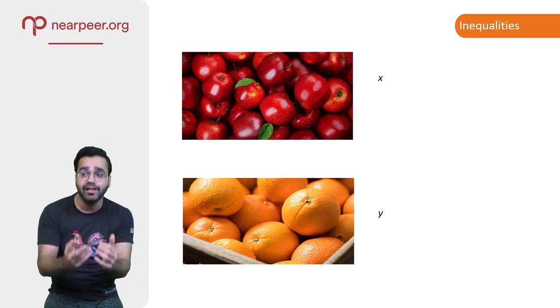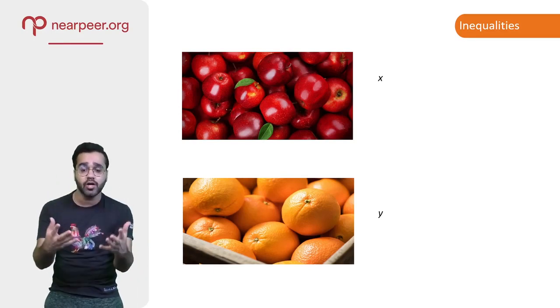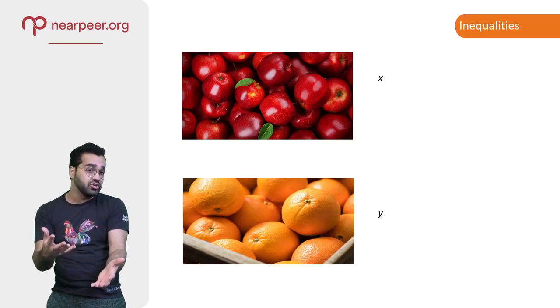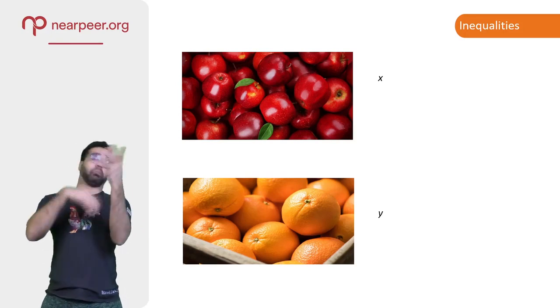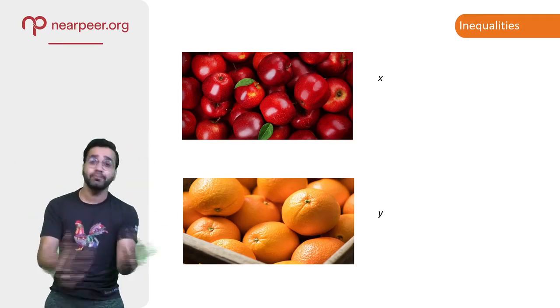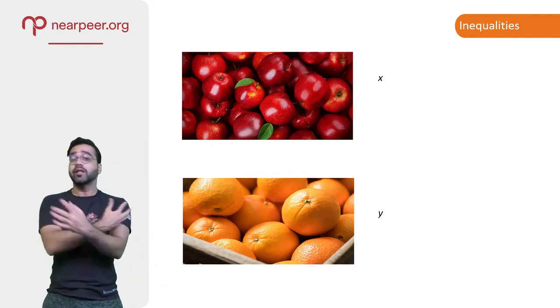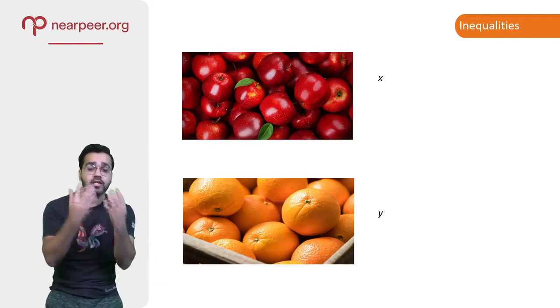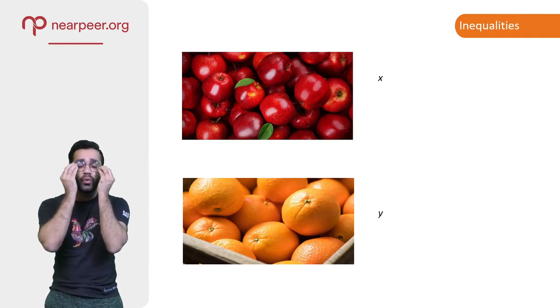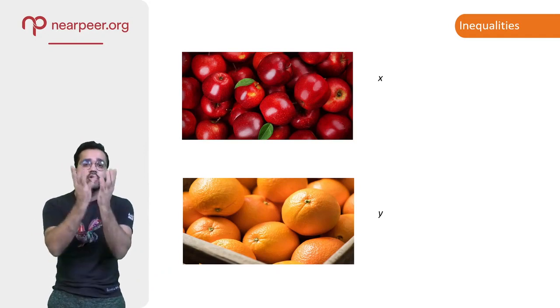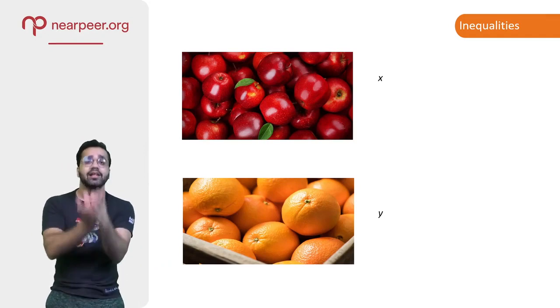You want to call them something else? You want to call apples ooga booga booga? You want to call oranges shmoranges, if that's even a word? It's up to you. That's what I'm trying to teach you—that symbols can be anything and they can mean anything. We use variables or symbols to represent things that we don't often know in math.